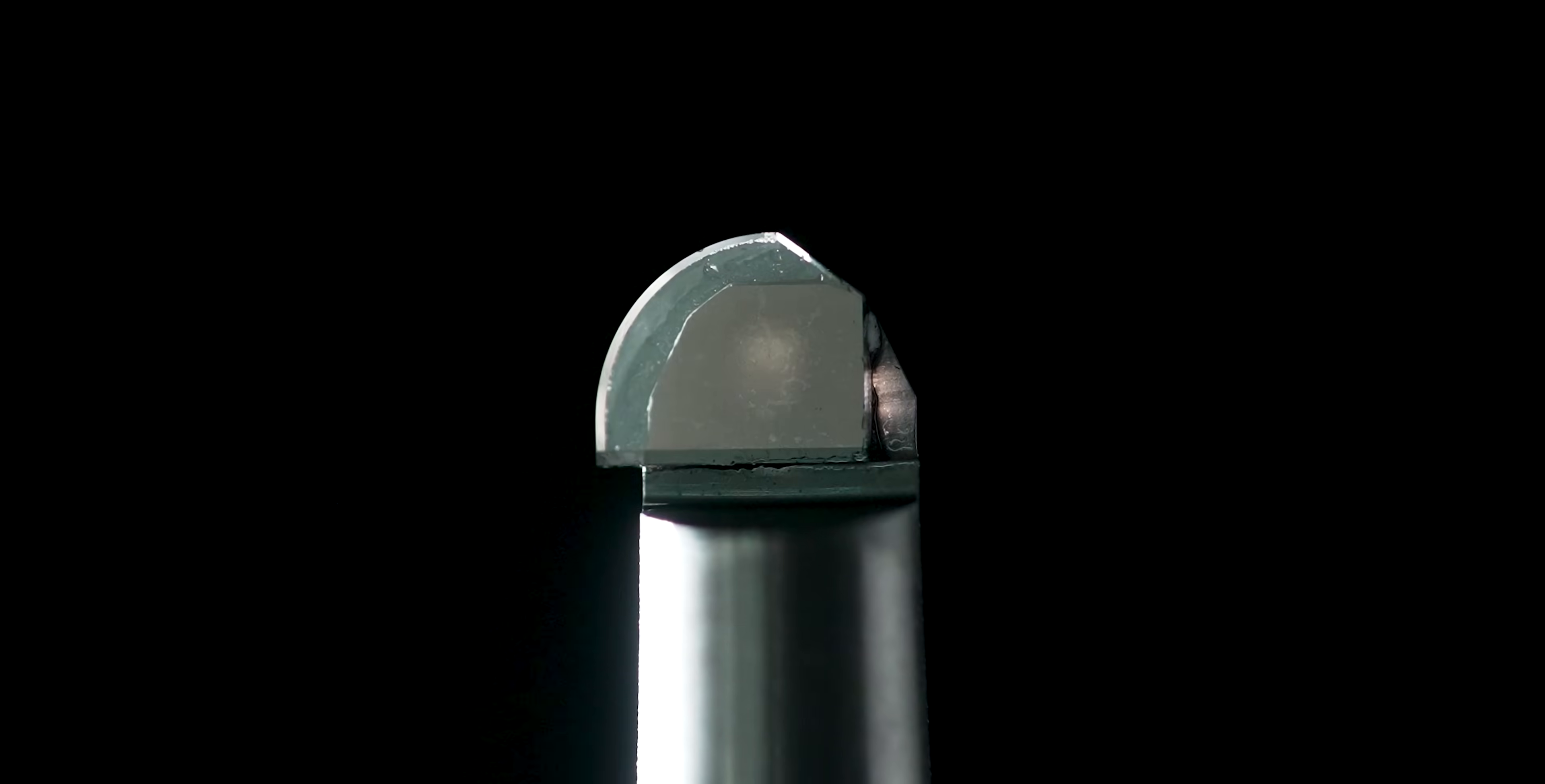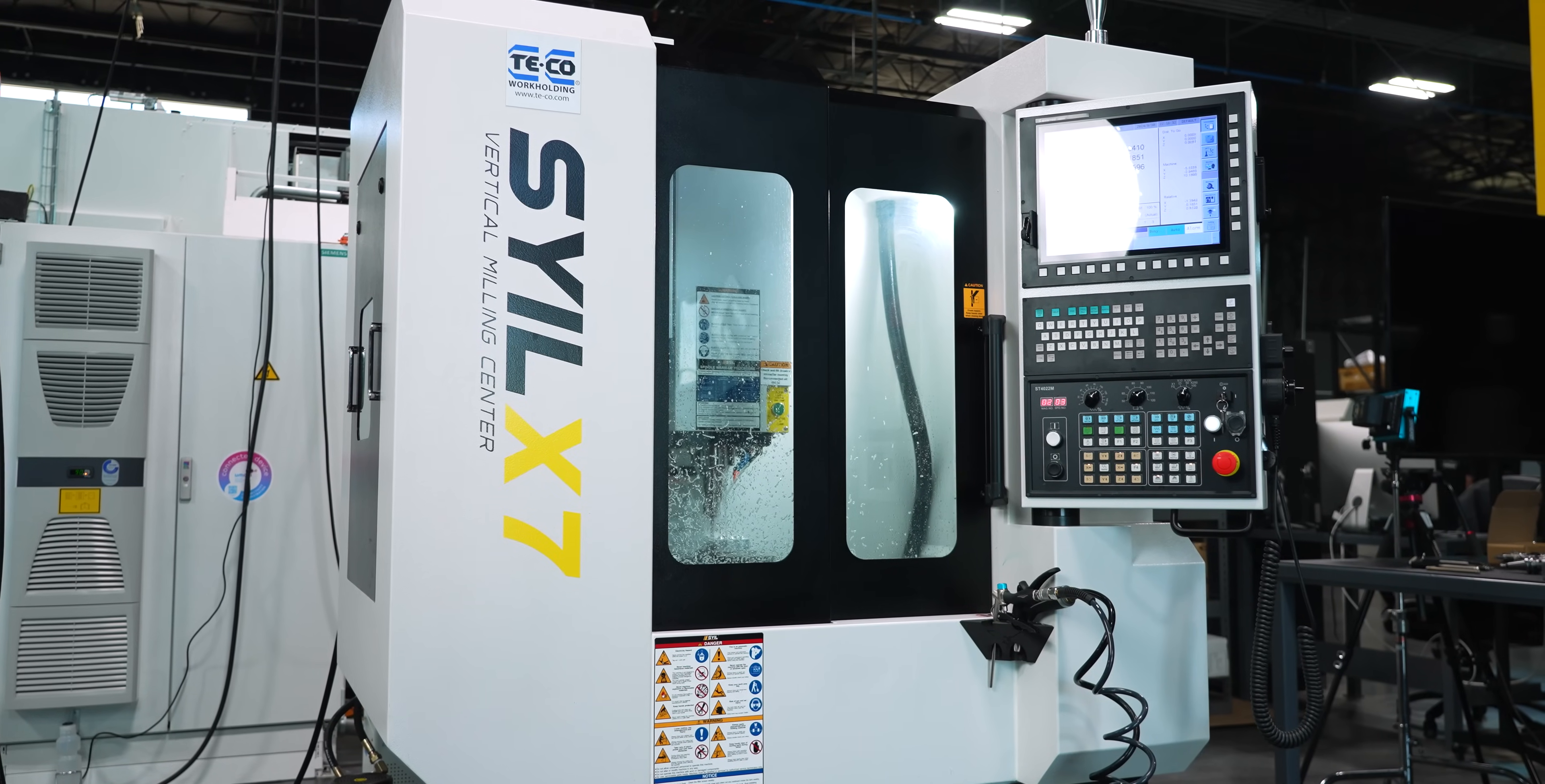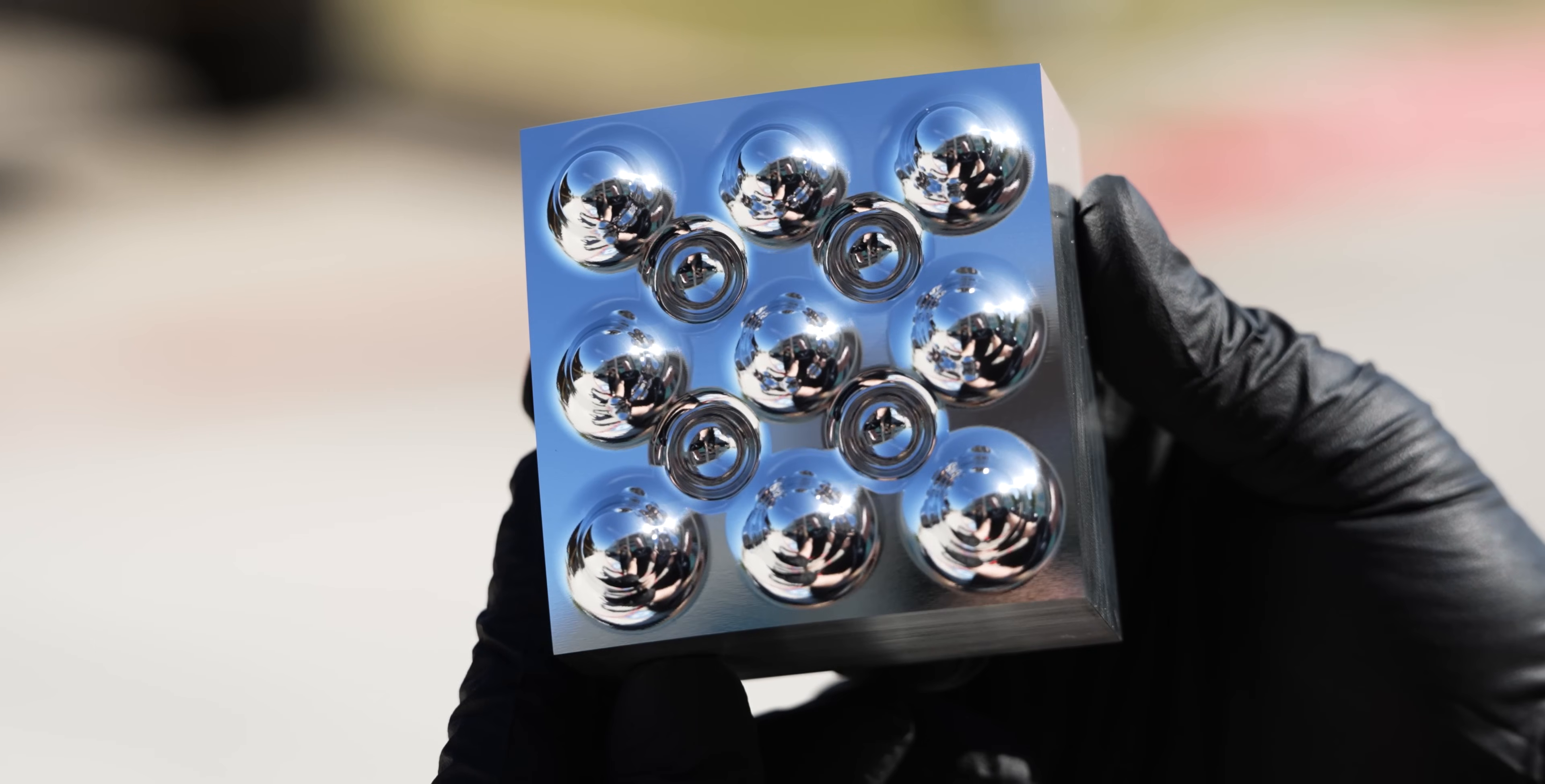As you can see using Horn's MCD tools, we were able to accomplish under an 8 RA surface finish which technically classifies as a mirror finish on a $40,000 CNC machine that could fit in your garage. That absolutely blows my mind. My first time running this machine and I'm completely blown away.